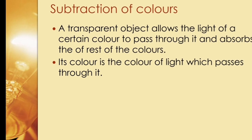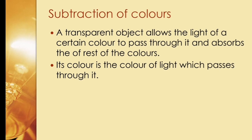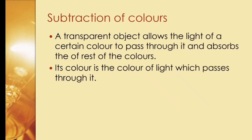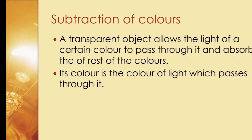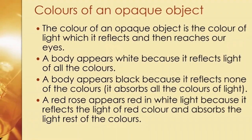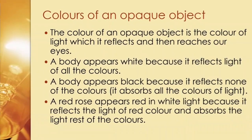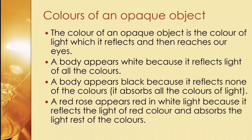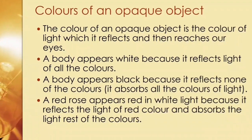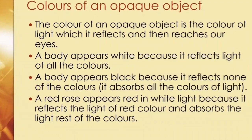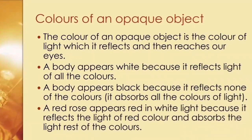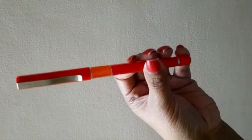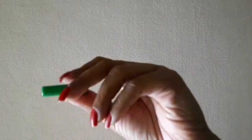Transparent objects allow some light to pass while absorbing some. These objects appear the same color as the color of light they allow to pass through them. The color of an opaque object is the color of light it reflects. White means it reflects all light; black means it absorbs all light and reflects none. A red rose appears red because it reflects red light; a green leaf appears green because it reflects green light. In white light, a red pen appears red and a green cap appears green.